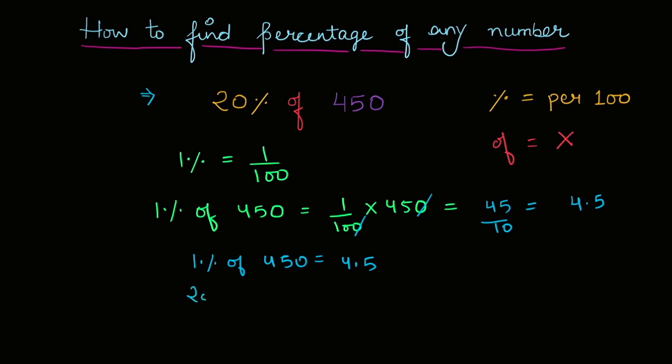Ab twenty percent toh zyada hai. It means mujhe four point five se twenty ko multiply karna hai. So twenty into four point five, which is equal to ninety.